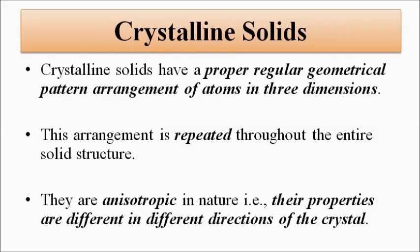Crystalline solids have a proper, regular geometrical pattern arrangement of atoms, molecules, or ions, and it is repeated throughout the entire solid structure in three dimensions — x, y, and z axes. The pattern, which can be simple or complicated, is repeated in three dimensions and makes up the entire solid structure.